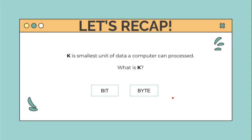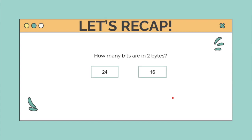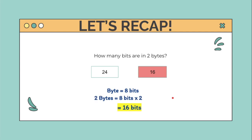The smallest unit of data a computer can process — what is it? The smallest unit of data would be a bit. Next, how many bits are in two bytes? The answer would be 16. Why? One byte is equal to eight bits, so two bytes equals eight bits times two, giving us 16 bits.